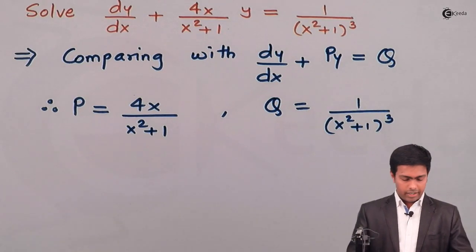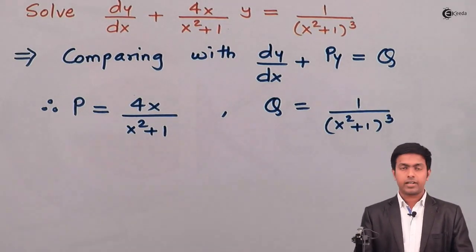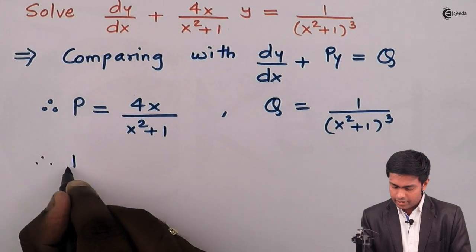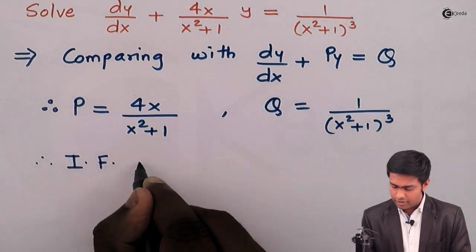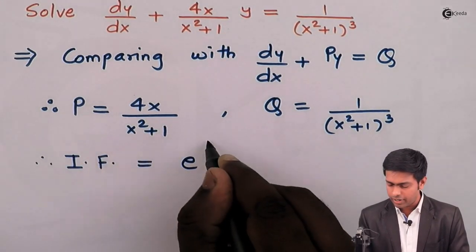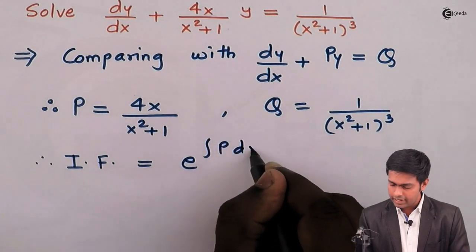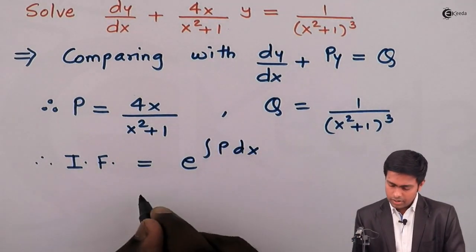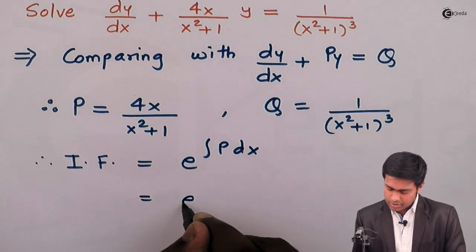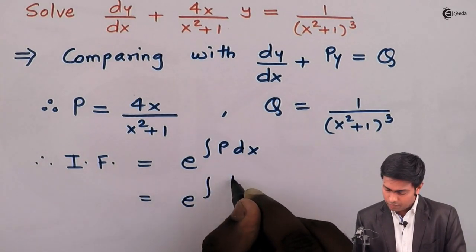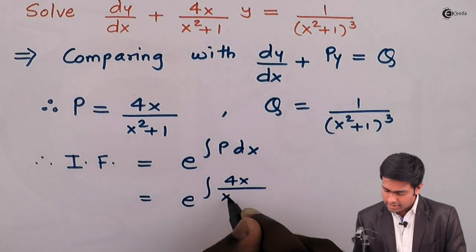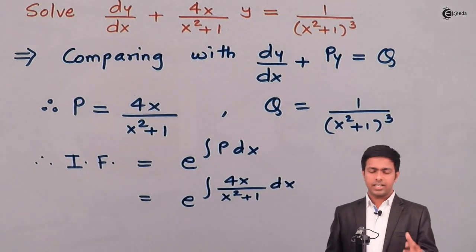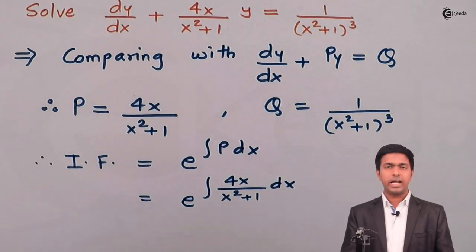Now let's find out the integrating factor. The integrating factor is given by the formula e raised to the integration of P dx. So here it becomes e raised to the integration of 4x upon (x² + 1) dx. Now the question is how to get this integration.